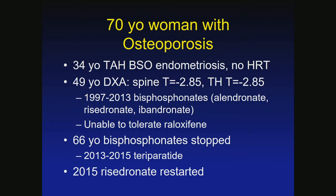Case 6: A 34-year-old had a total abdominal hysterectomy and bilateral salpingo-oophorectomy for endometriosis and was not on hormone therapy — so premature menopause with low estrogen. At age 49 she had osteoporosis by spine T-score, didn't want estrogen, and was placed on various bisphosphonates over many years. She was unable to tolerate raloxifene, which caused hot flashes. So she was on and off different bisphosphonates over the years.